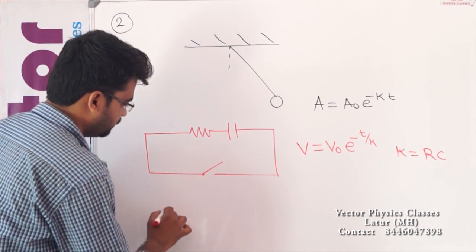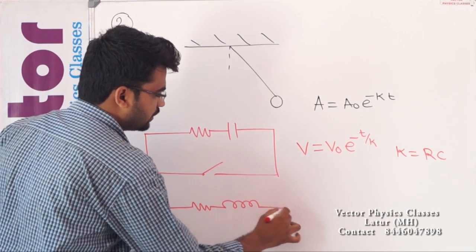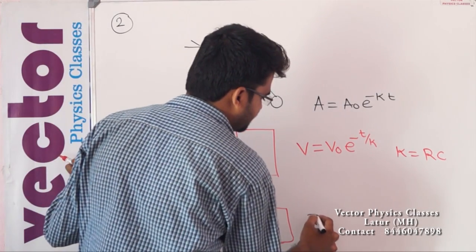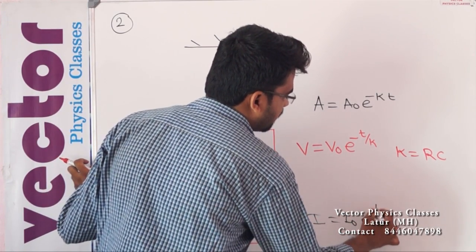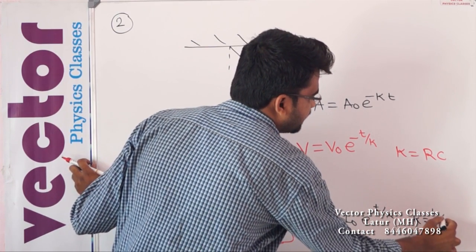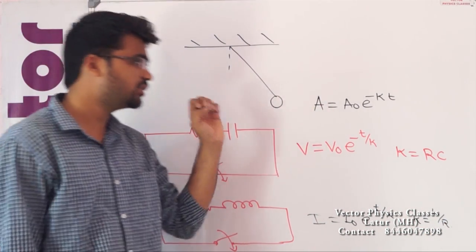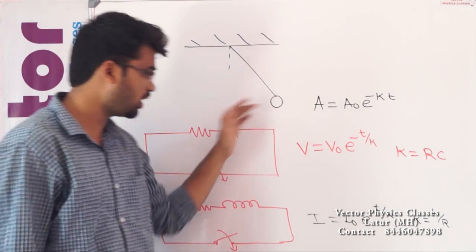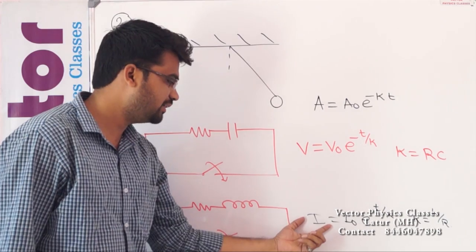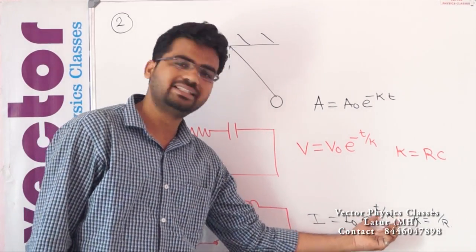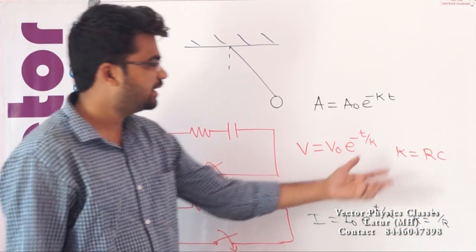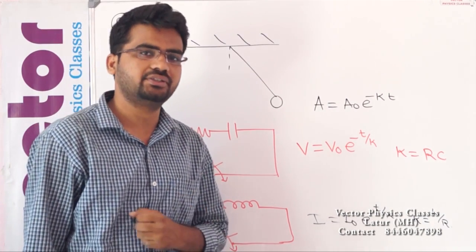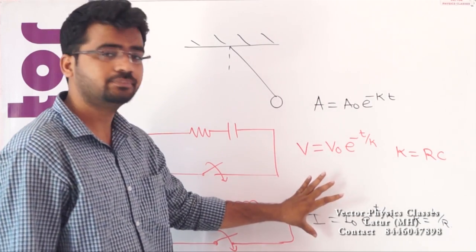Likewise, for an inductor where current decays: I = I₀·e^(−t/k), and k equals L/R. So the same format applies to radioactive material, pendulum amplitude, discharging capacitor voltage, and decaying inductor current. You just need to remember this single format and you can derive all others very easily.